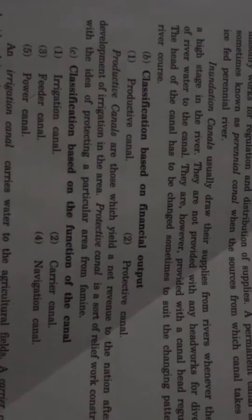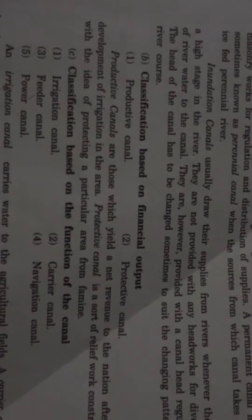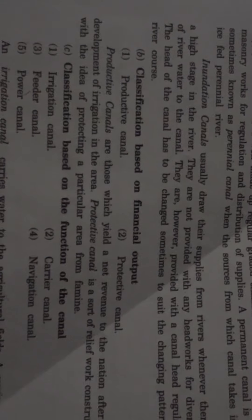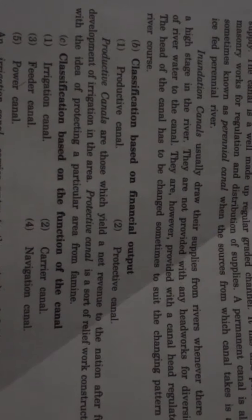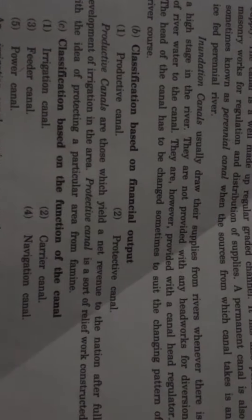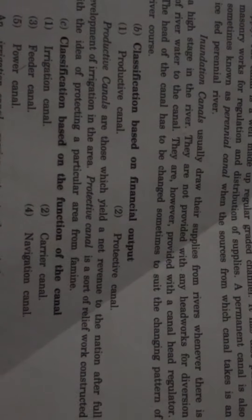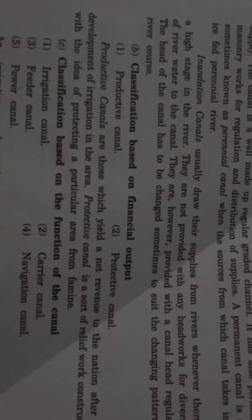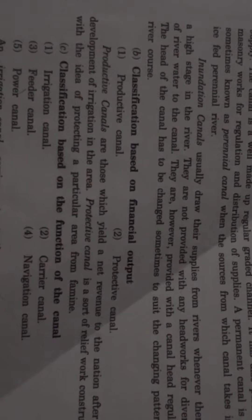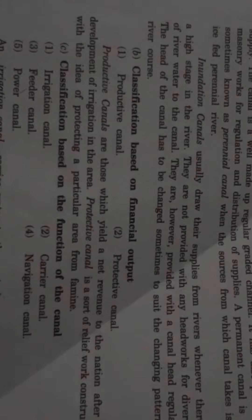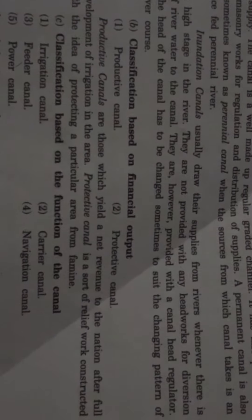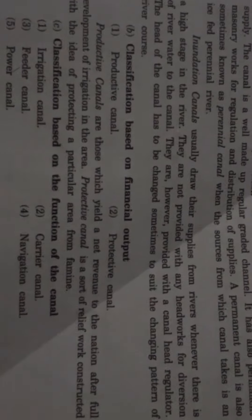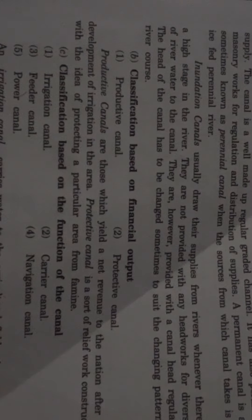Classification based on financial output: productive canal and protective canal. Productive canals are those which yield a net revenue to the nation and support the full development of irrigation in the area. A protective canal is a relief work constructed with the idea of protecting a particular area.